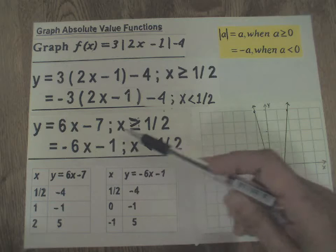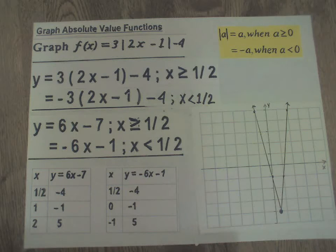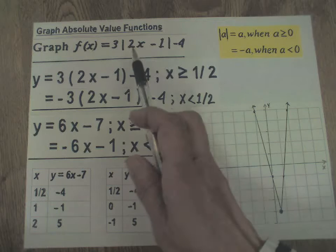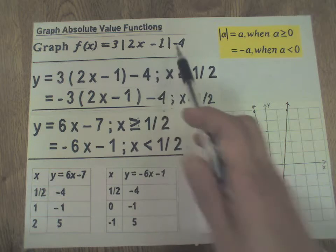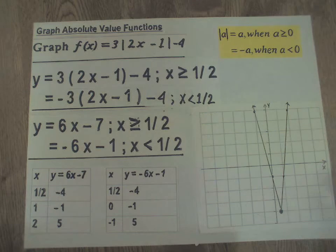So that line is the representation of y = 6x - 7, this one to the right and including 1/2. This whole thing, therefore, is the graph of my absolute value function f(x) = 3|2x - 1| - 4. So here is your final answer.